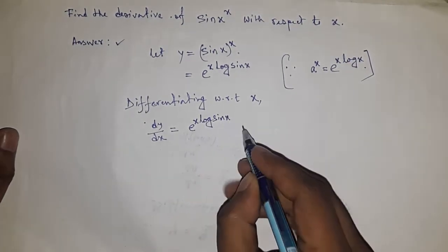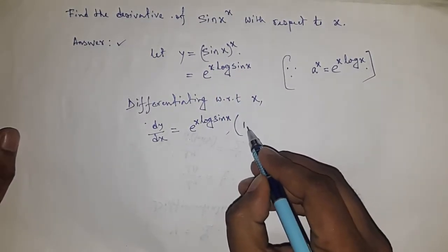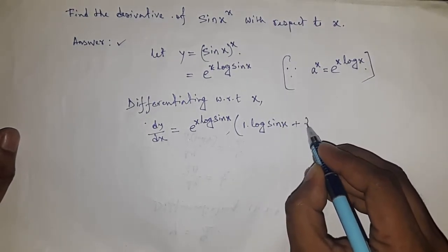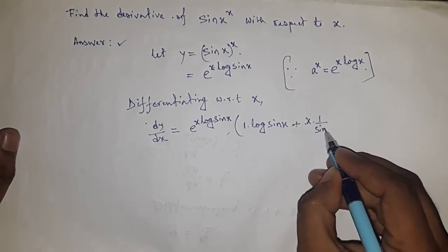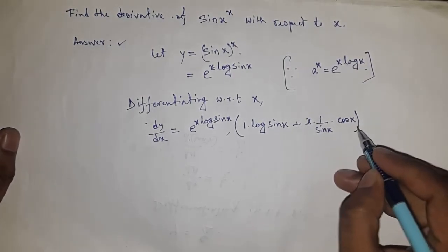...times the derivative of x log sin x. The derivative of x equals 1, and the derivative of log sin x is 1 by sin x, and the derivative of sin x is cos x.